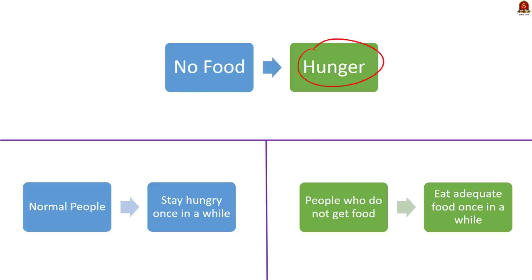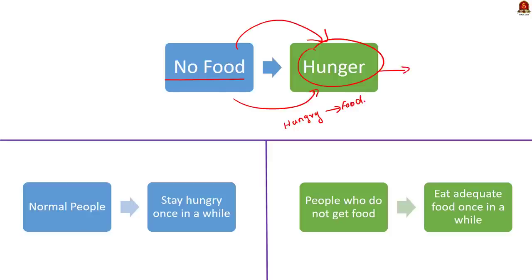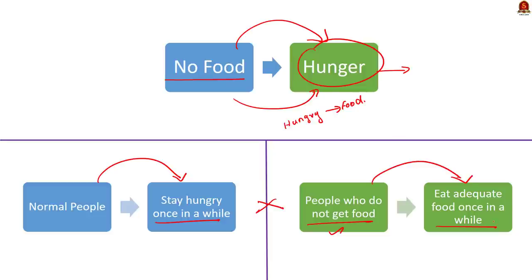When do we feel hungry? When we do not eat food, we feel hungry. Not having adequate food leads to the state of hunger. We arrived at this conclusion easily because on a daily basis we feel hungry and we consume food. On the worst case scenario, we could have stayed hungry for a day. There are people who do not get adequate food on a daily basis — once in a while they get to eat good and adequate food. So their condition is like the reversal of ours.